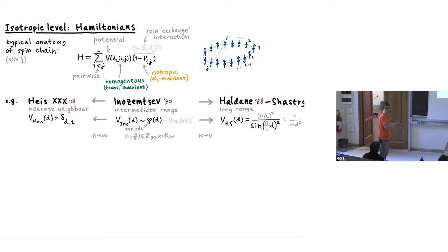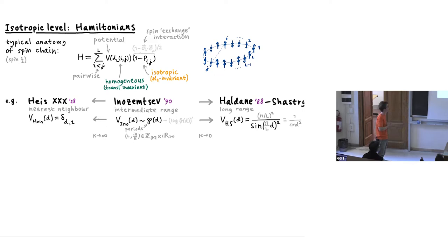The way to think about this Weierstrass P-function is as a combination of one-over-sine-squared and one-over-sinh-squared — two periods. Sending L to infinity removes the real period and gives one-over-sinh-squared, which has imaginary periods. So one can think of the Weierstrass P-function as combining both periodic structures.